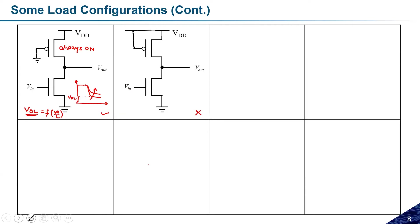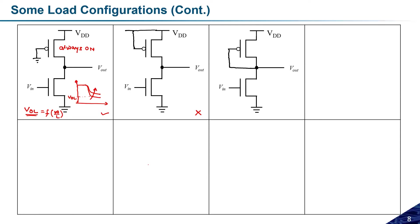Now let us consider other combinations. The third combination: suppose I connect the gate of the pMOS load to the output voltage. Can anyone tell me how this circuit will behave? You have to check what the Vgs, Vds, and other potentials are for the load transistor, and accordingly decide whether it is in active mode, cutoff, or saturation.